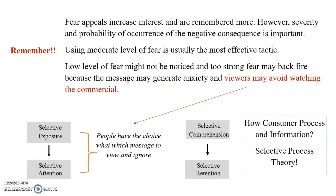Fear appeal increases interest and is remembered more; however, the severity and probability of occurrence of the negative consequence is very important. From selective process theory, we understand that consumers can decide which advertisement they attend to or expose themselves to. If you don't find the right balance of fear in your advertisement, consumers might ignore it. Low levels of fear might not be noticed, and too strong a fear may backfire, generating anxiety so that viewers avoid watching the commercial.